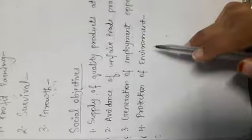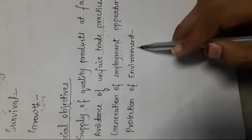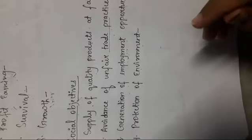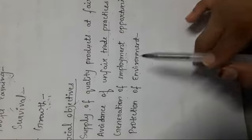Next point: protection of environment. Our business, industry, or enterprises should not pollute the surrounding locality and environment. Pollution should not be created from our industry. Therefore, whatever disposal there is from the company — smoke, wastage, waste water, chemicals — all of it should be properly disposed of so that our environment can remain pollution-free. Our industry should not be the cause of environmental pollution; we need to be careful about this.